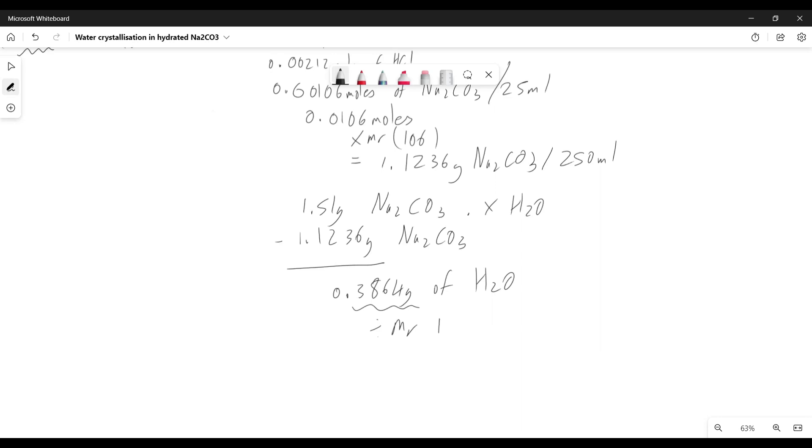If we get this 0.3864 divided by 18, we will get the following value: 0.0214 moles of H2O in our compound.